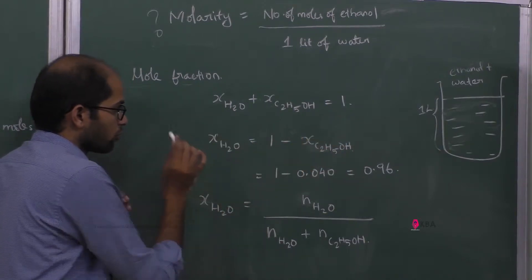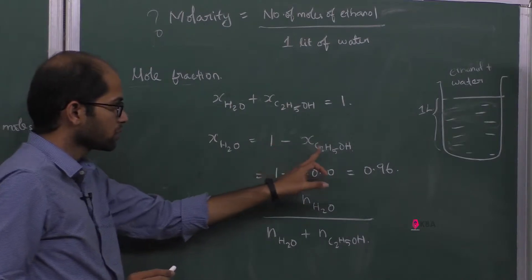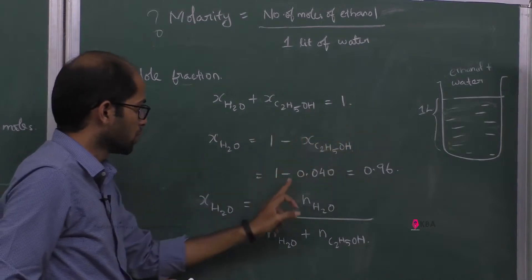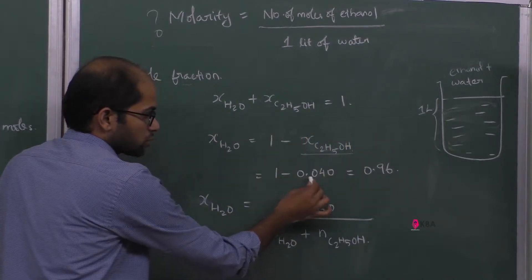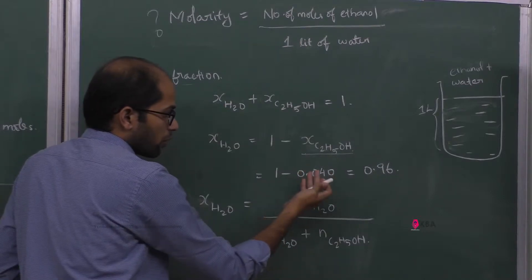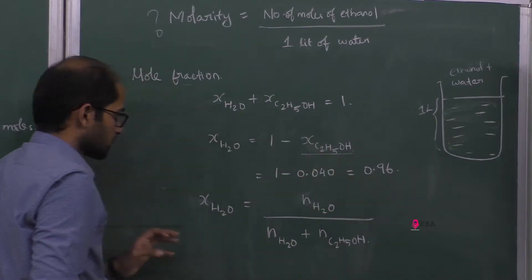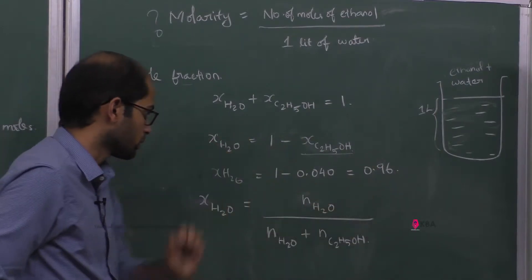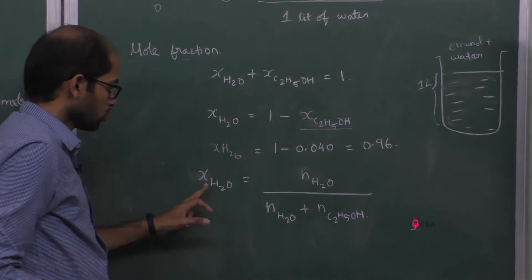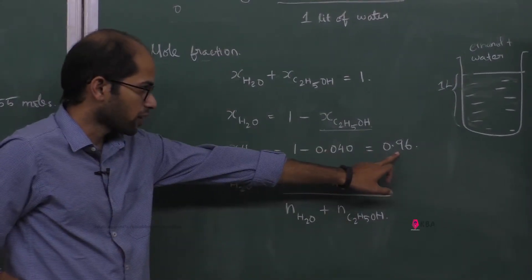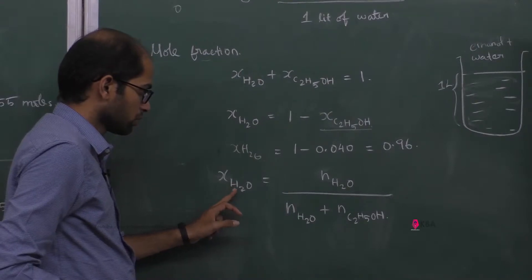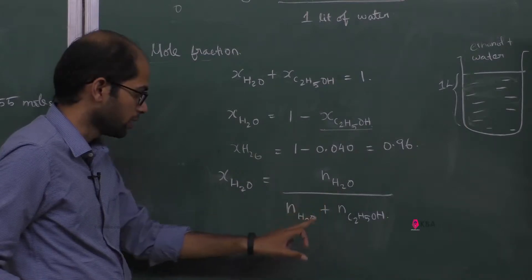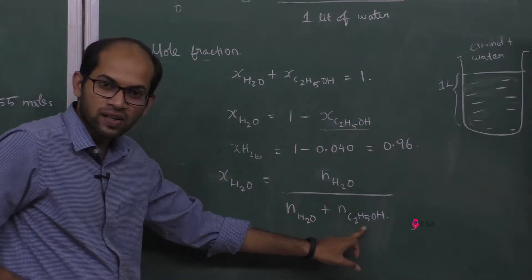The mole fraction of ethanol is 0.040. So, 1 minus mole fraction of ethanol: 1 minus 0.040 is equal to 0.96. Therefore, the mole fraction of water is 0.96. The mole fraction of water equals number of moles of water divided by number of moles of water plus number of moles of ethanol.